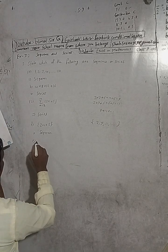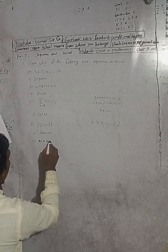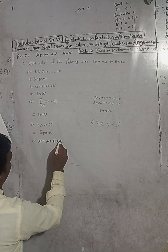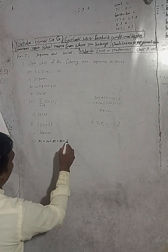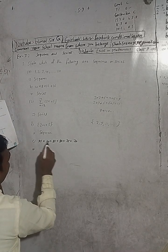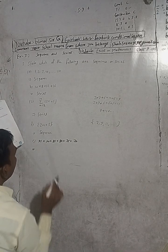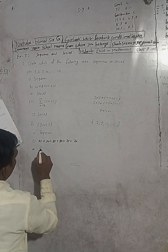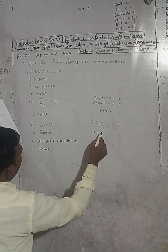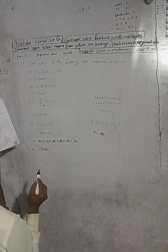This number here is 95 plus 90 plus 85 plus 80 plus 75. This is a sequence: 95 comma 90 comma — the plus minus gives the original number. However, you have the number.